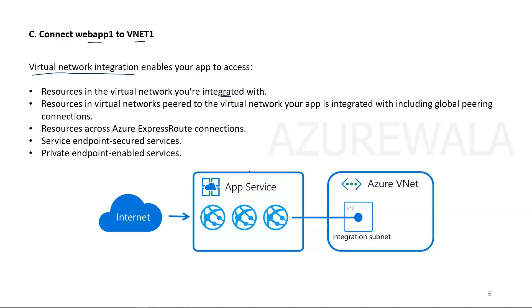This meets the requirement in our question — the application service has to communicate with the resources residing in our virtual network. To communicate with resources inside an Azure virtual network, we require it to integrate with the application, and that is a feature available in the web app. Therefore, this is the correct answer.